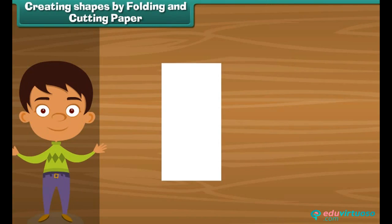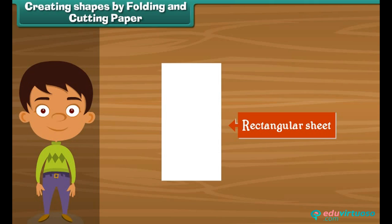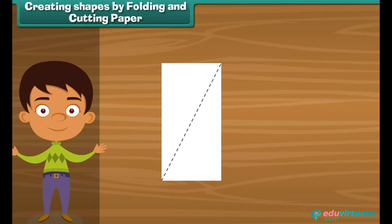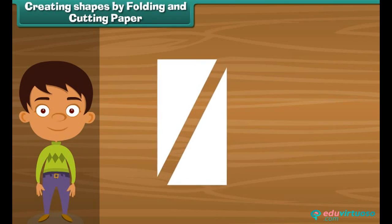Anu takes a sheet of paper. What can you say about the shape of this sheet? Yes, it is rectangular in shape. Anu tries to make a triangle out of it. Draw a dotted line on the sheet of paper like this. Cut the paper on the dotted line.